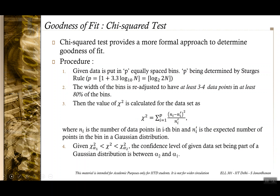The computed chi-square value will fall between two particular values in the table, chi-alpha-1-square and chi-alpha-2-square. That means we can say that the given data set is a Gaussian distribution with a confidence level between alpha-2 and alpha-1.